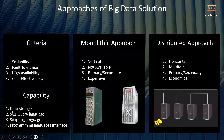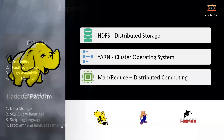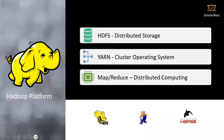Data storage was offered by HDFS. SQL query capability was offered by Hive. Scripting language capability was offered by PIG. And programming language interface was offered by MapReduce itself — initially only Java. So Hadoop came up with all these capabilities and components.